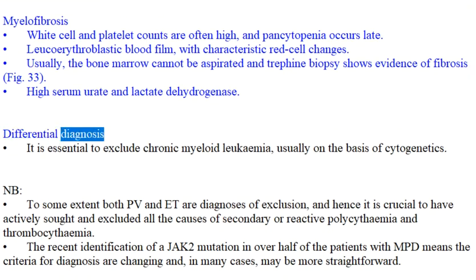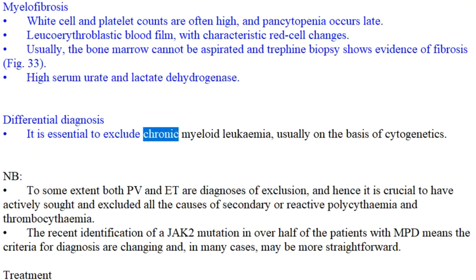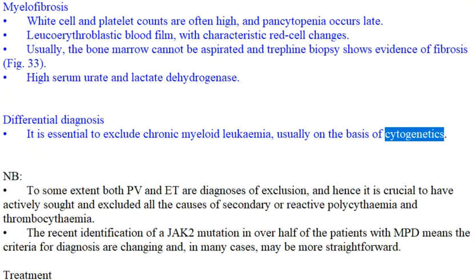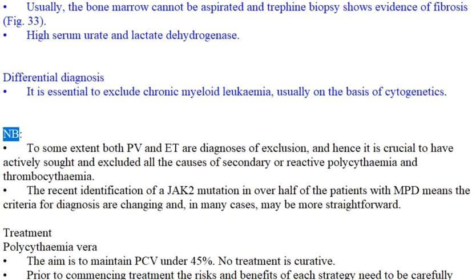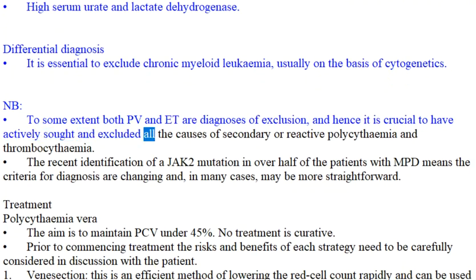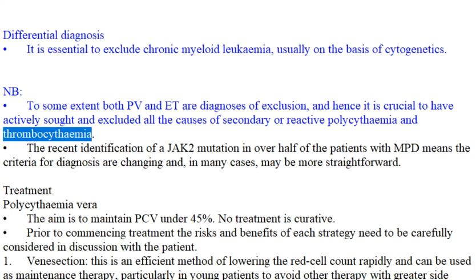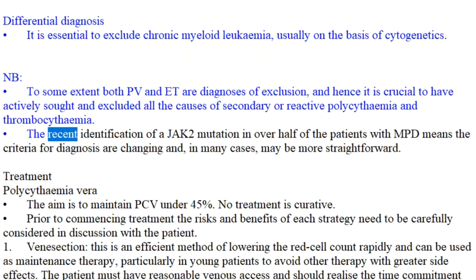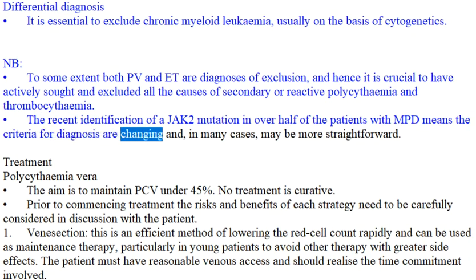Differential diagnosis: It is essential to exclude chronic myeloid leukemia, usually on the basis of cytogenetics. NB: To some extent both PV and ET are diagnoses of exclusion, and hence it is crucial to have actively sought and excluded all causes of secondary or reactive polycythemia and thrombocythemia. The recent identification of a JAK2 mutation in over half of patients with MPD means the criteria for diagnosis are changing and, in many cases, may be more straightforward.